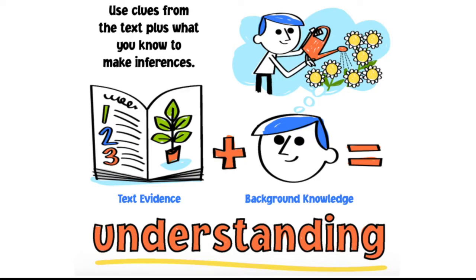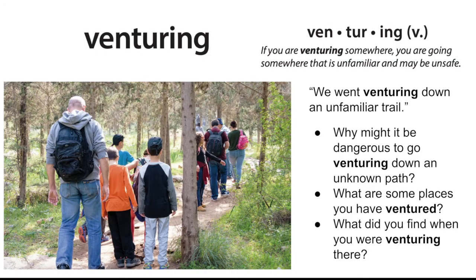We'll practice this in our meetings as well, but keep it in mind while you're listening to Scaredy Squirrel or reading it in your My Book or both. Before you start reading, I also want to introduce four important vocabulary words in this story. The first one is venturing. Venturing is a verb — it's an action word or a thing you do. If you are venturing somewhere, it means you're going somewhere that's unfamiliar or might be unsafe.